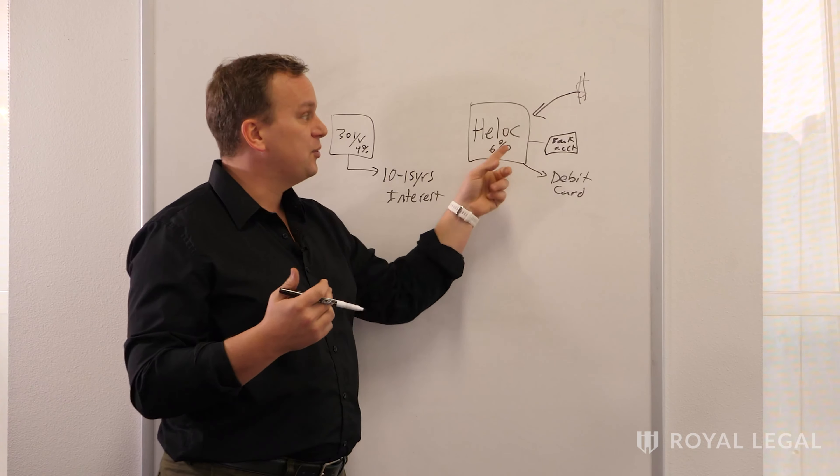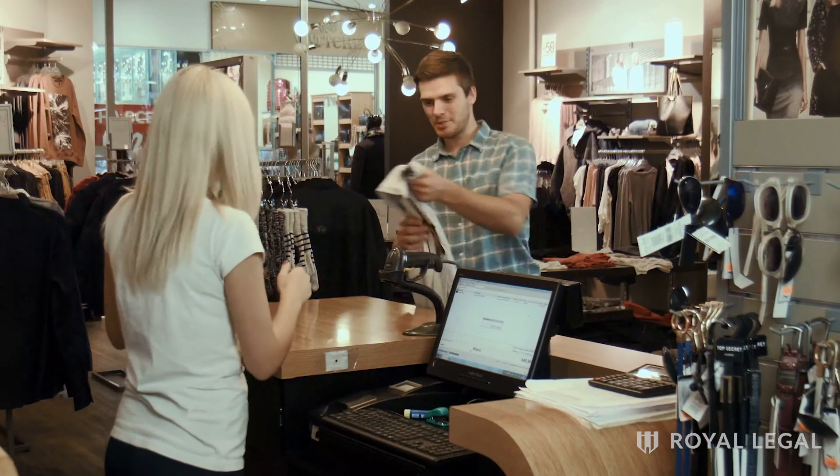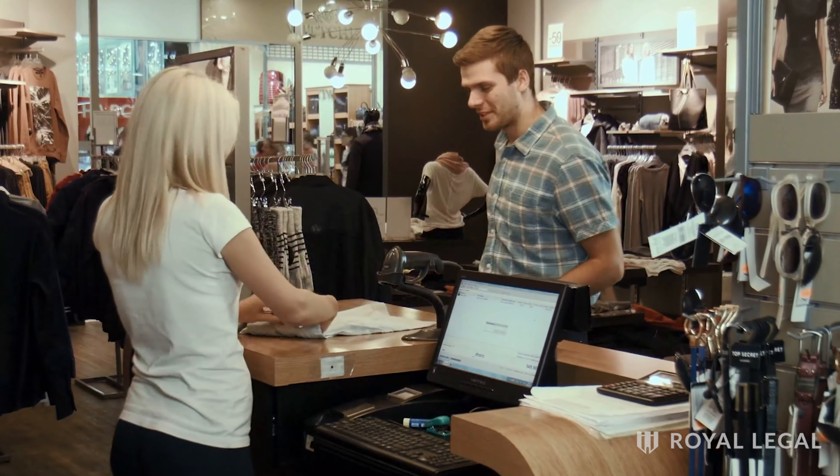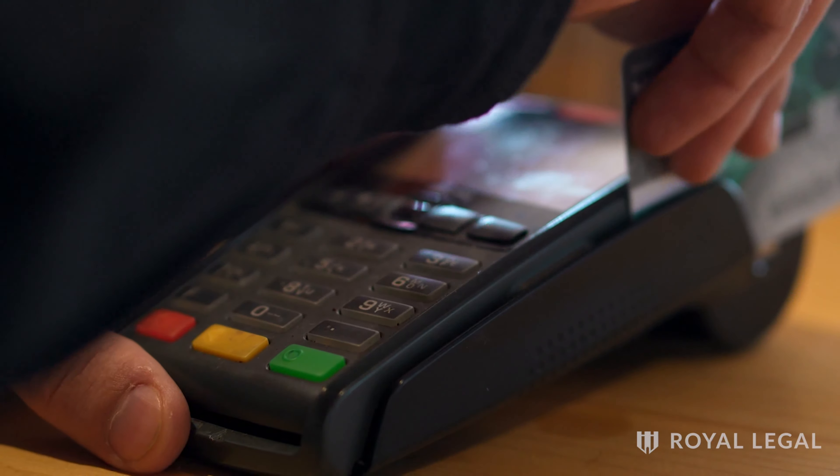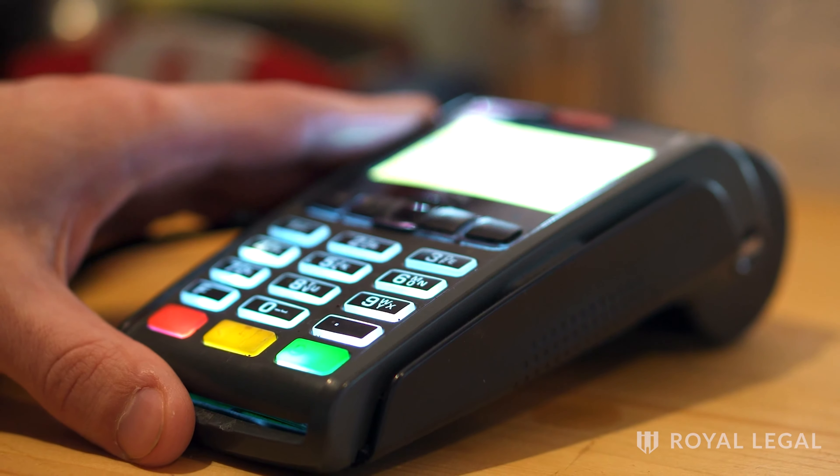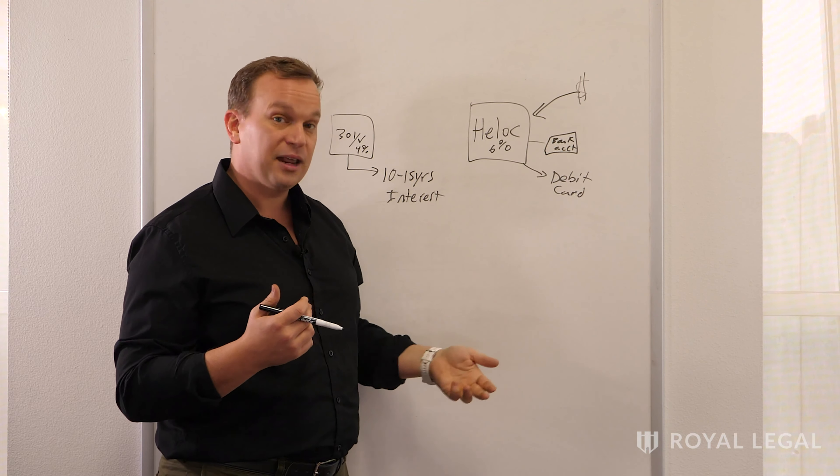So the net effect is that every dollar you have goes down to pay your principal mortgage balance. If you need to buy anything, you just use your debit card to do it. Anything that you would typically need to do can run out of your bank account in terms of automatic payments.